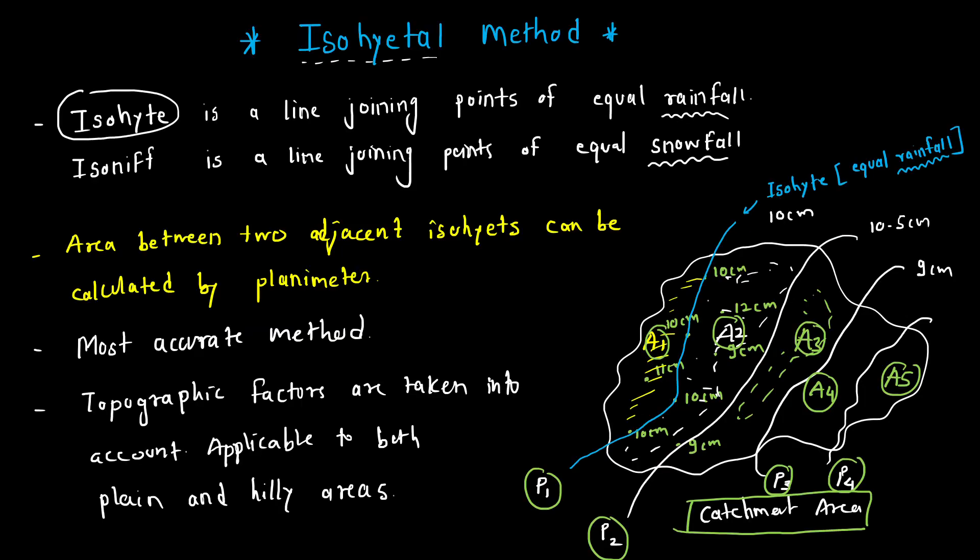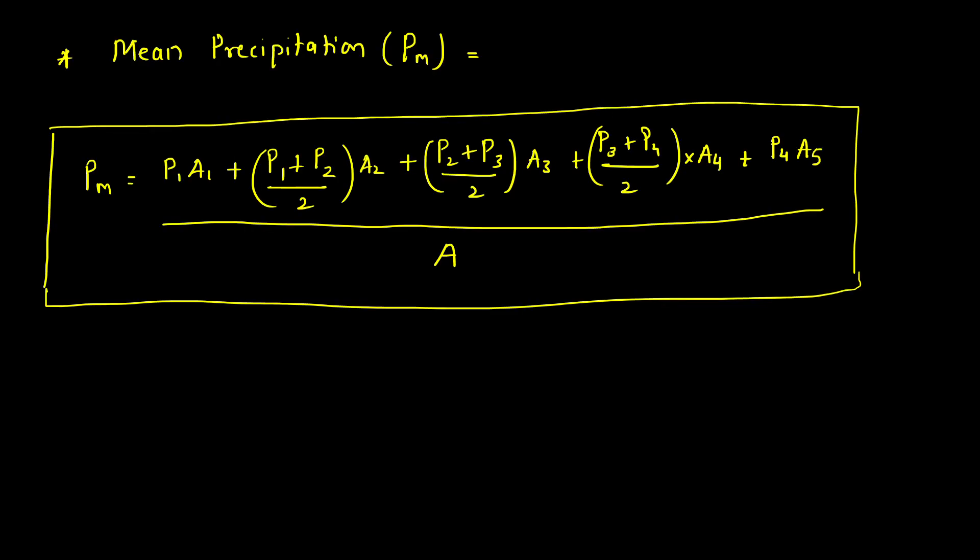The isohyetal method: isohyets are lines joining points of equal rainfall; isoniph is for equal snowfall. It is the most accurate method and can be used in hilly areas. The formula derived earlier gives mean precipitation using isohyetal values and inter-isohyet areas. That completes the mean precipitation concept; the next video will start the next topic.